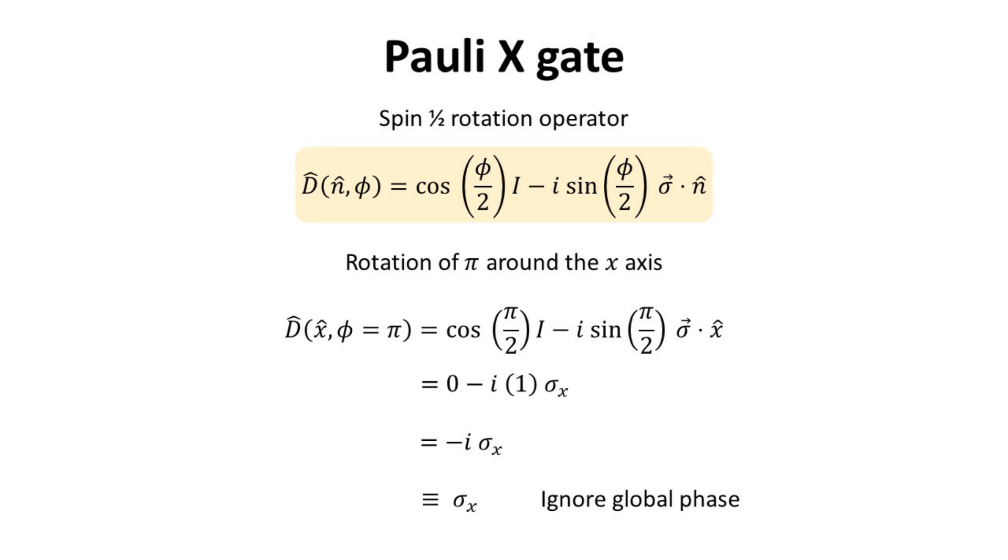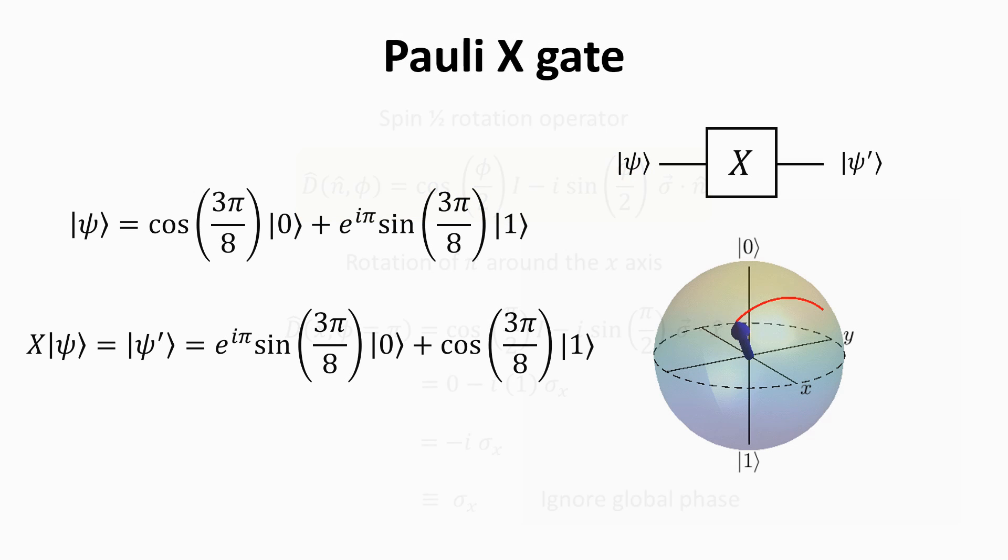In the last step, we have removed the minus I factor because it is just a global phase. Recall that in the Bloch sphere representation, all qubit that differs by a global phase lies at the same point on the surface of the Bloch sphere. Here's another example of the X gate operating on a more general qubit psi. Note that the trajectory traces out a half circle, in accordance with the pi rotation with respect to the X axis.